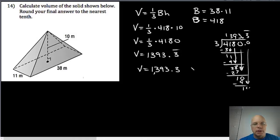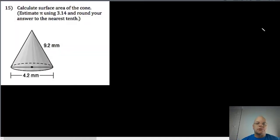Last problem on the review, problem 15: calculate surface area of the cone. We learned a formula for surface area of the cone—actually derived in class. It's going to be equal to pi multiplied by the radius multiplied by the slant height, plus pi r squared.